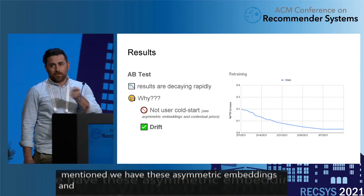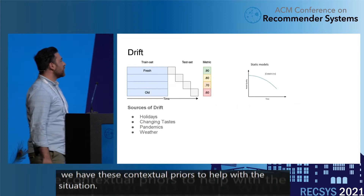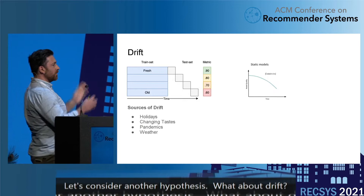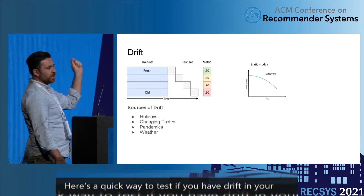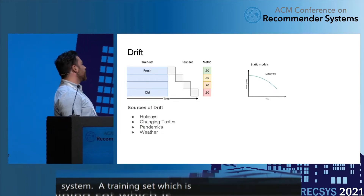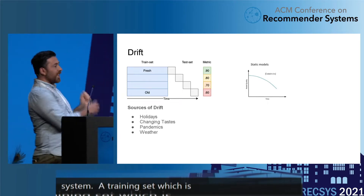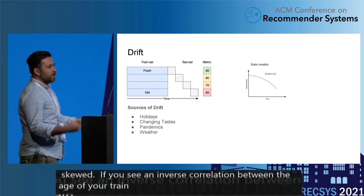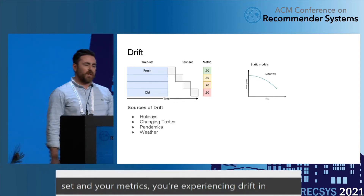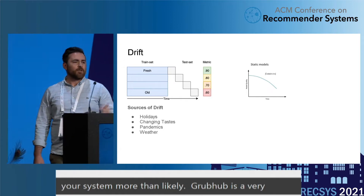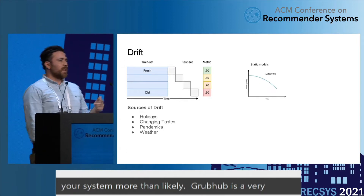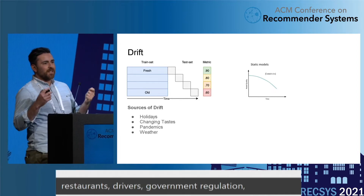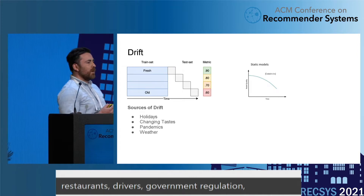Grubhub is a very complex, dynamic marketplace with lots of stakeholders — diners, restaurants, drivers, government regulation, acts of God. Through all of these interventions and conspiring forces, we get drift in our system. What's a quick fix? Retraining is pretty reasonable. Here's a quick way to do it: take a fixed-width training set. We have daily partitions of data and found we can get to convergence with four days. We make a sliding window where on the y-axis we have different rounds of training, shifting the window over once each time.